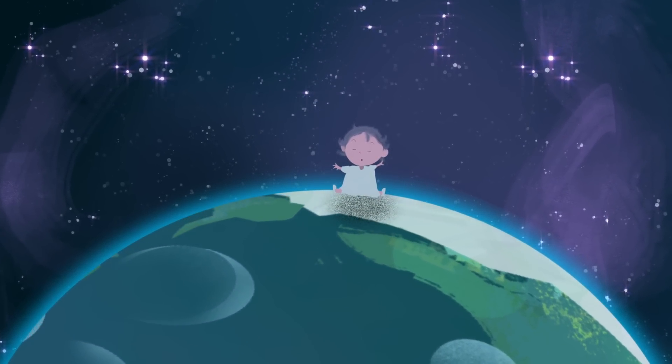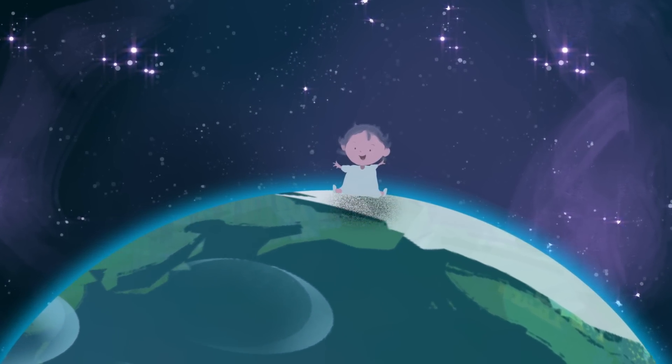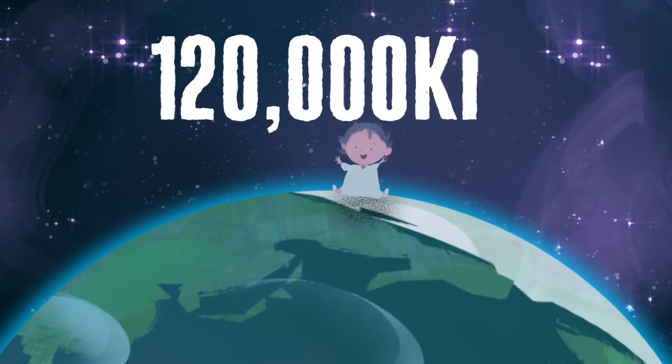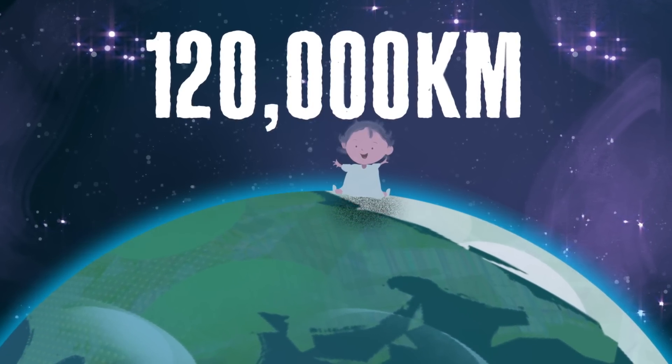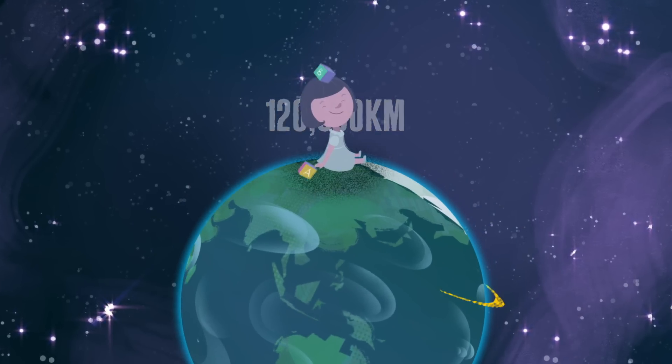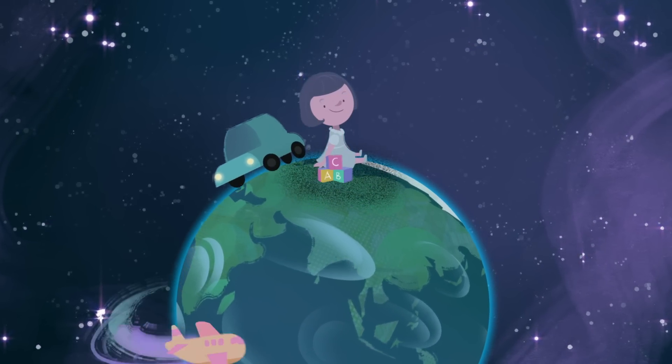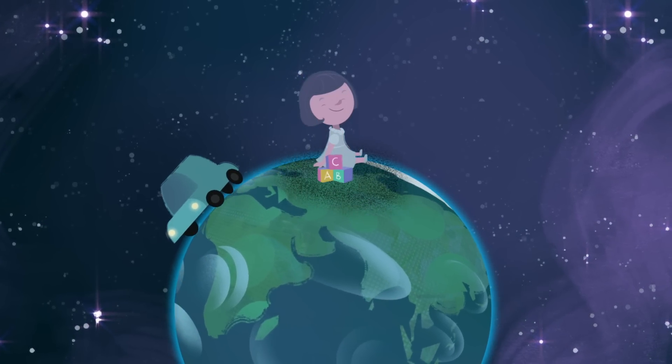Your atlas starts on the planet's surface. Over the course of your life, you've walked about 120,000 kilometers, the equivalent of three trips around the globe. Daily commutes and international travel add a few more.